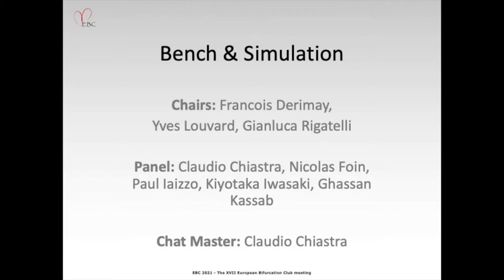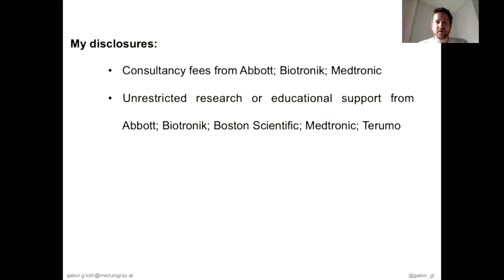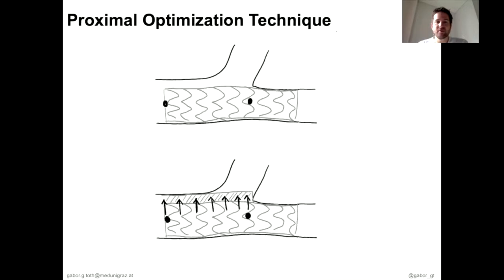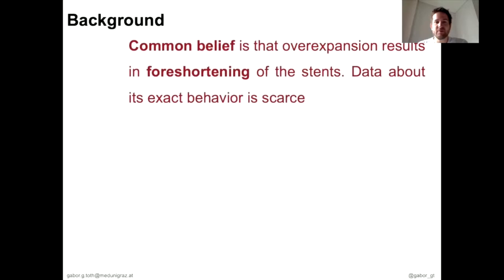In this talk, I would like to present the results of our analysis assessing the longitudinal stent deformation during POT. Proximal optimization technique aims to achieve proper apposition in the proximal main branch through a certain overexpansion within the segment. It is a common belief that this overexpansion results in foreshortening of the stents; however, data about its exact behavior is scarce.